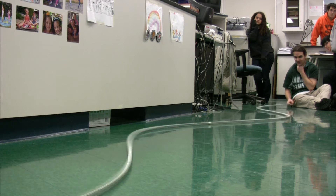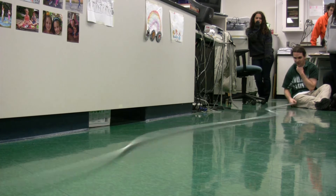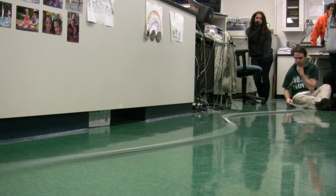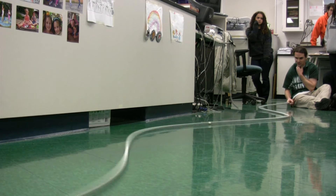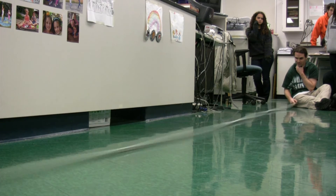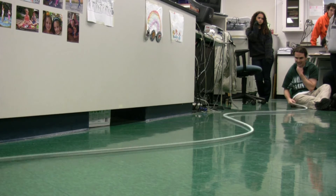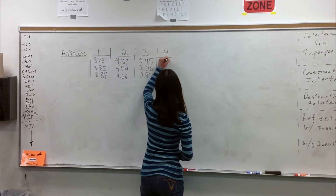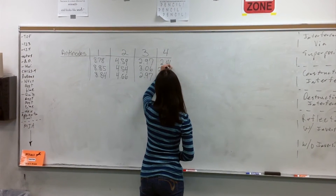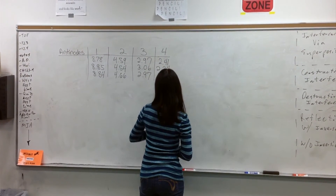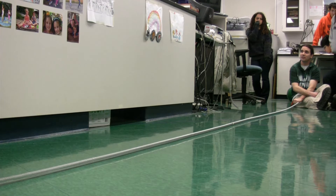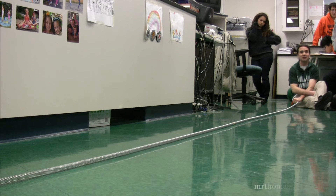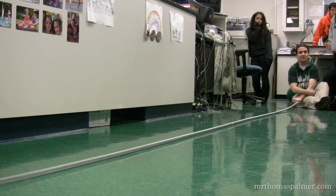Three, two, one, zero, one, two, three, four, five, six, seven, eight, nine, ten. Two point four one. Two point three four. So these are all times for various numbers of antinodes for ten full cycles. What we're going to end up doing from that is figuring out the speed of the wave in this standing wave.